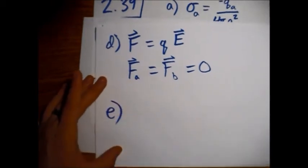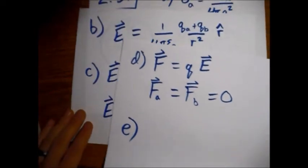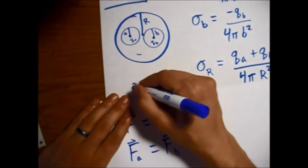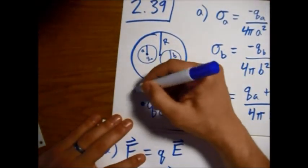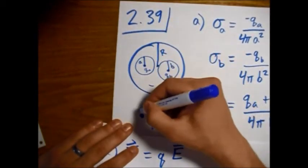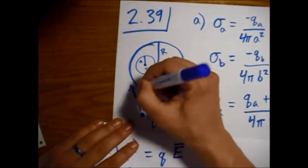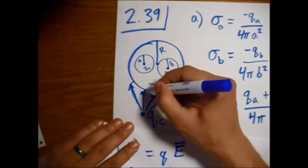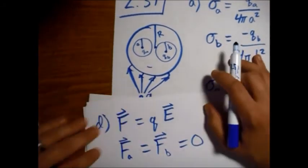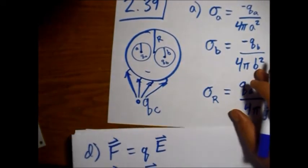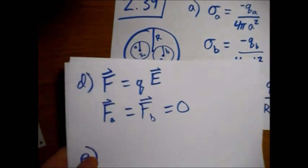Part E says which of these answers would change if a third charge, QC, were brought near the conductor? So now what we're going to say is we have a charge out here. Basically what we're saying is we're putting this thing into an external electric field. I mean, I guess the field lines would bend in so they're perpendicular to the conductor at all locations. But basically we have, now our little guy has a beard I guess, but now we have an external field.